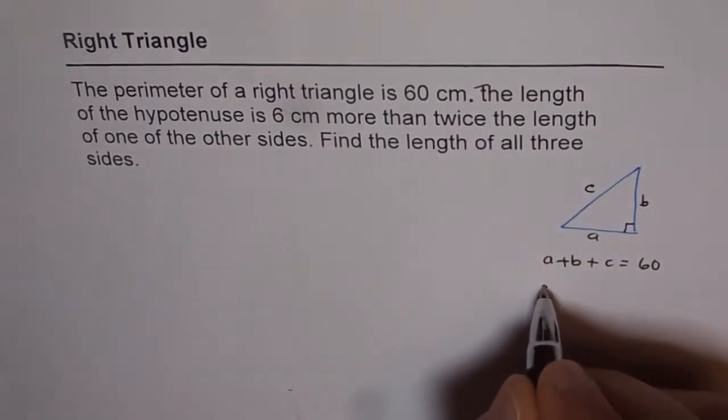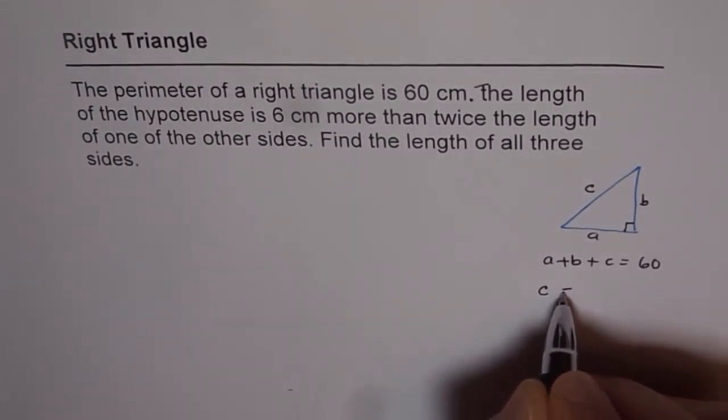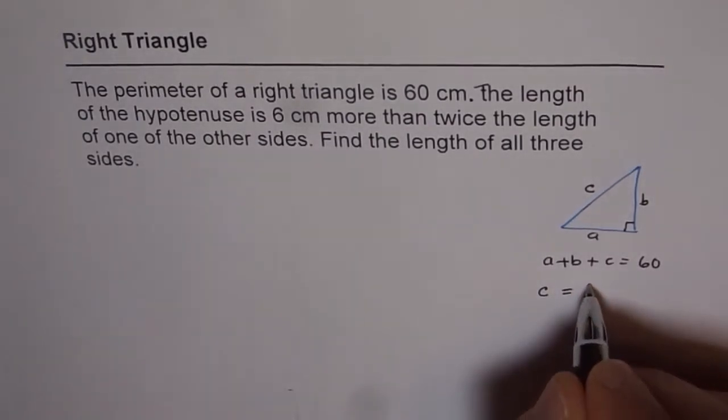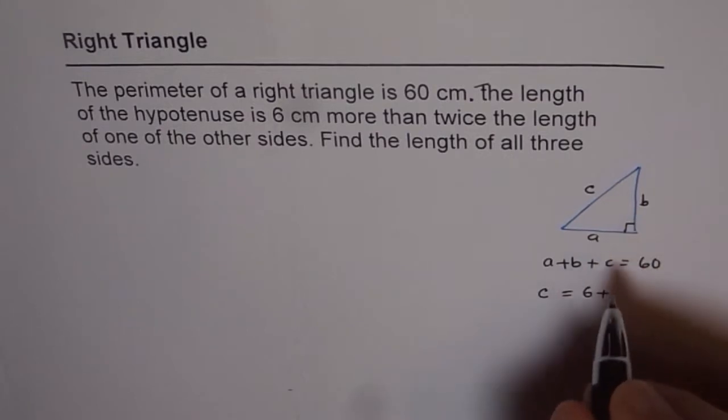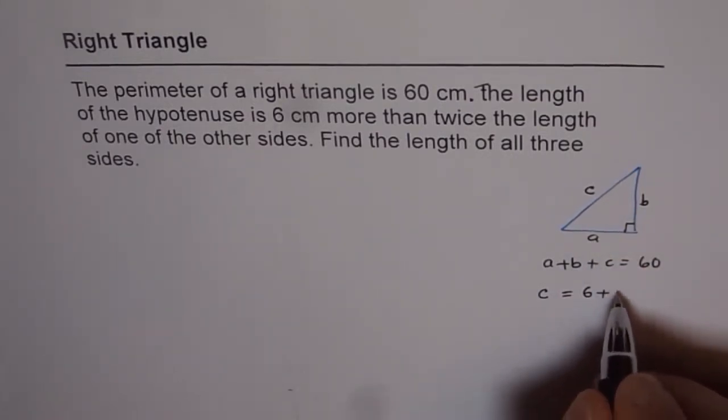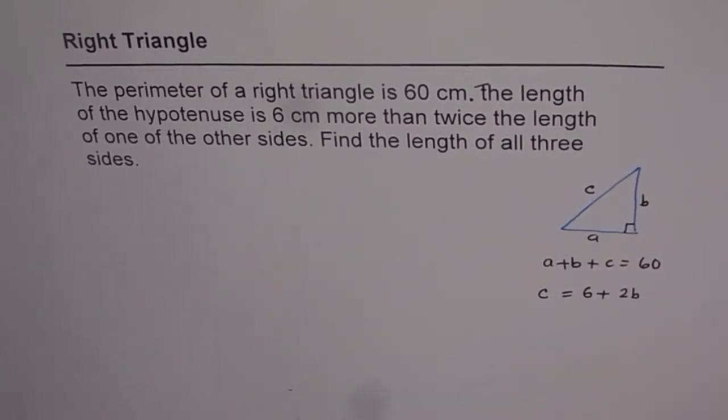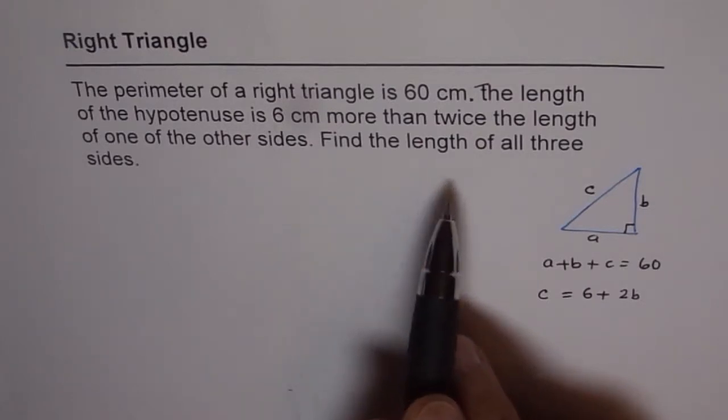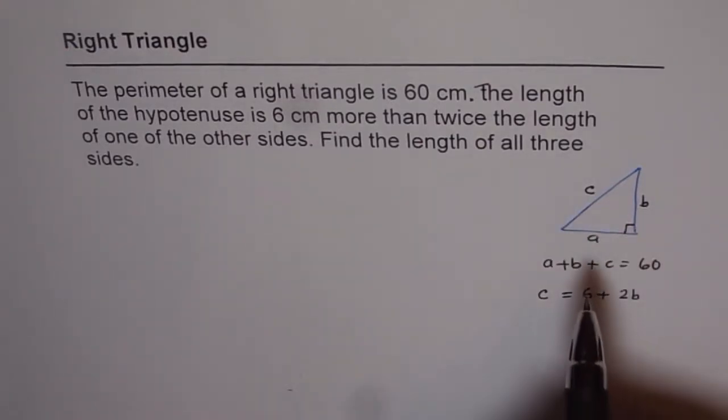The second condition is that the length of hypotenuse is 6 cm more than twice the length of the other side, so let the other side be 2b. So c equals 6 plus 2b. Now we need to find what is a, b and c.